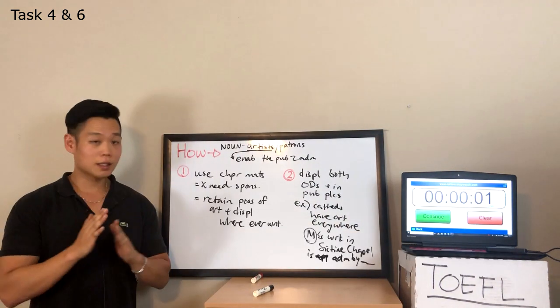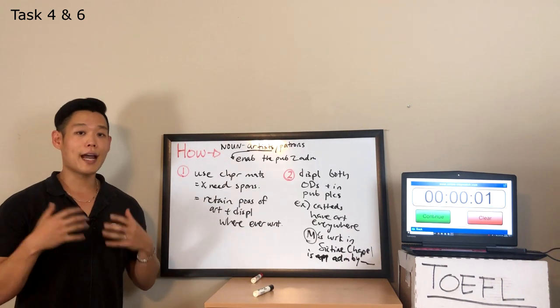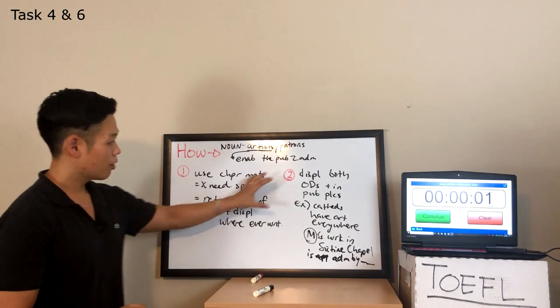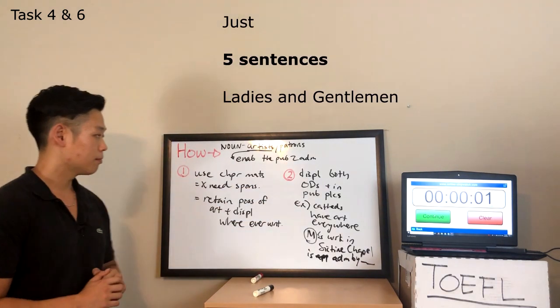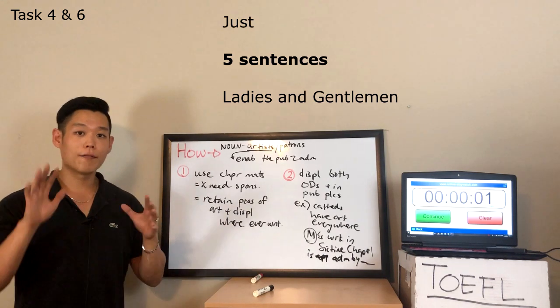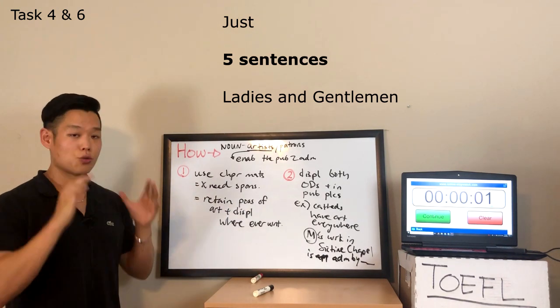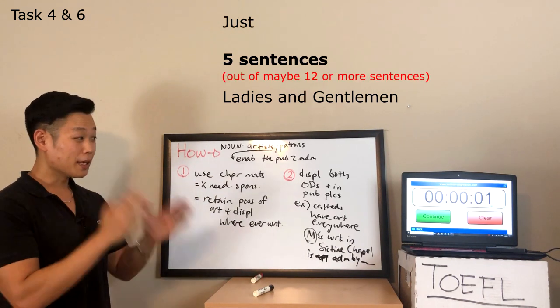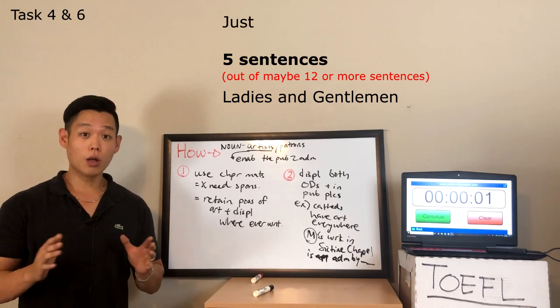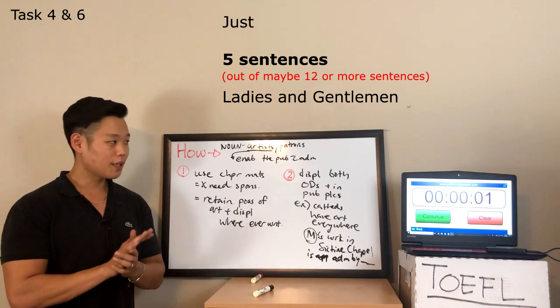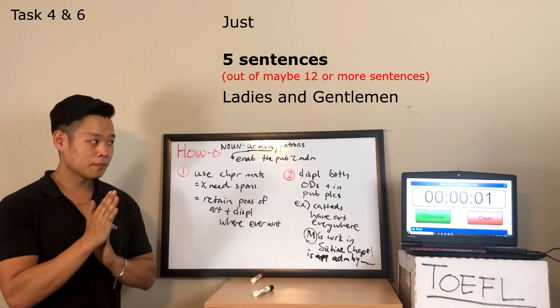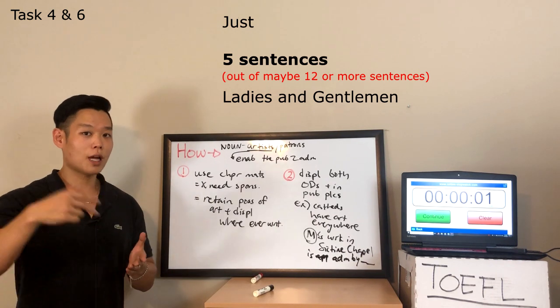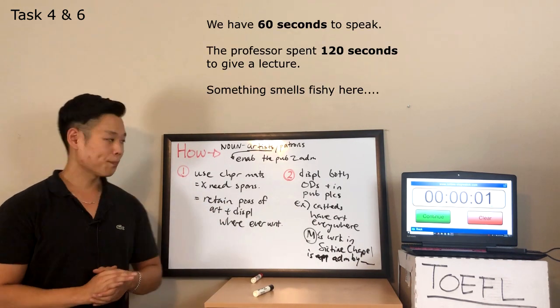All right, ladies and gentlemen, let's count how many sentences I actually said from the lecture. One, two, three, four, five. I only organized five sentences from the lecture. Now, I'm sure that the professor said more than a dozen sentences. I'm certain of that because this lecture was very, very long. If I had to guess, I would say that this lecture was maybe about 130 seconds long, so even longer than two minutes, which is two times more than the amount of time that we're given to speak.